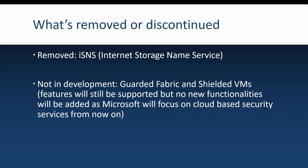Now for the bad news — deprecated or discontinued features. The only feature fully removed from 2022 is the Internet Storage Name Service. A surprise is that the Guarded Fabric and Shielded VMs feature is no longer in active development. It is still supported and will receive bug and security fixes, but no new functionality will be added, because Microsoft now focuses on bringing cloud-based security services from Azure to on-premises. This is notable since Guarded Fabric only came out in Windows Server 2016, so it's already being phased out.